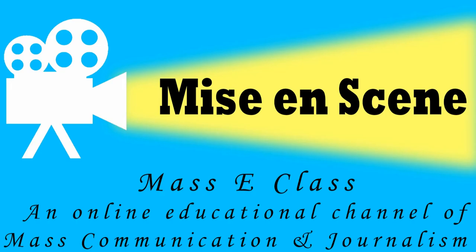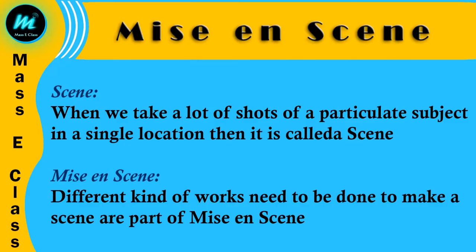So what is a scene? When we make a lot of shots of a particular subject in a single location, then it is called a scene. When we are taking a scene in a place, we are taking a lot of shots — we call that a scene. In filmmaking, the different types of work which are needed to make a scene look perfect is called Mise-en-scène.